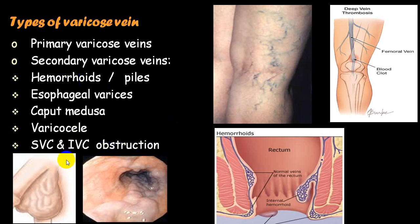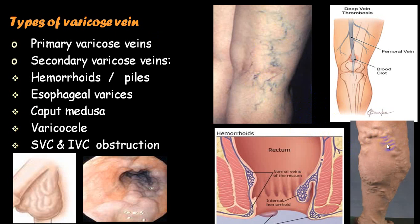These secondary groups occur due to some other basic etiology. Caput medusa is because of portal hypertension; esophageal varices and hemorrhoids are also because of portal hypertension. In superior vena cava obstruction, you get varicose veins in the upper limb and dilated veins over the chest and abdomen with blood flow from above downwards. In inferior vena cava obstruction, you get dilated veins in the lower limb plus chest and abdomen with blood flow from below upwards.